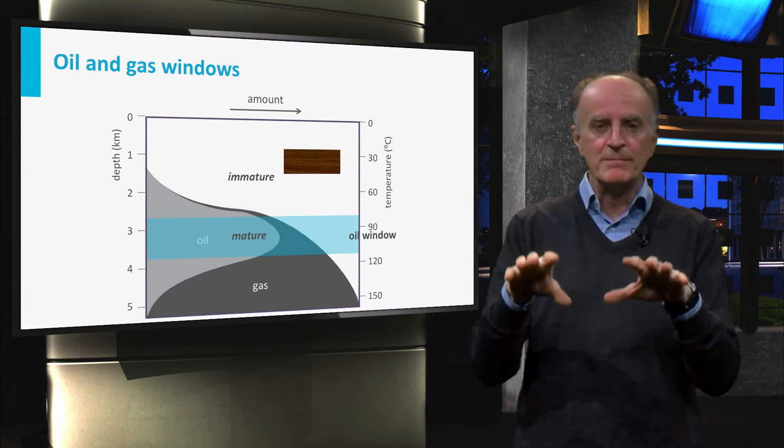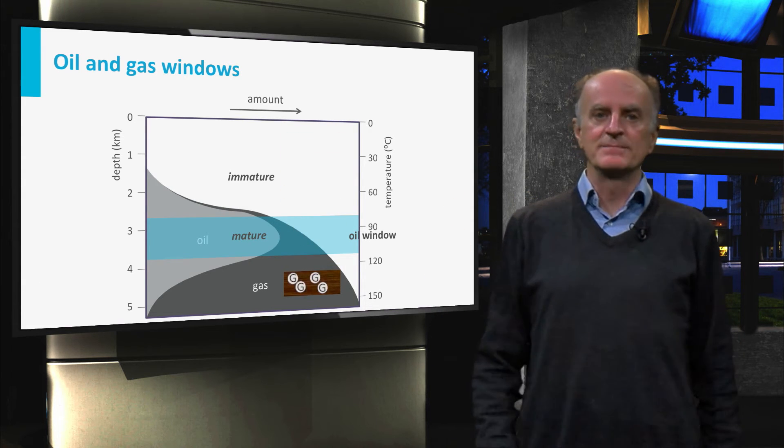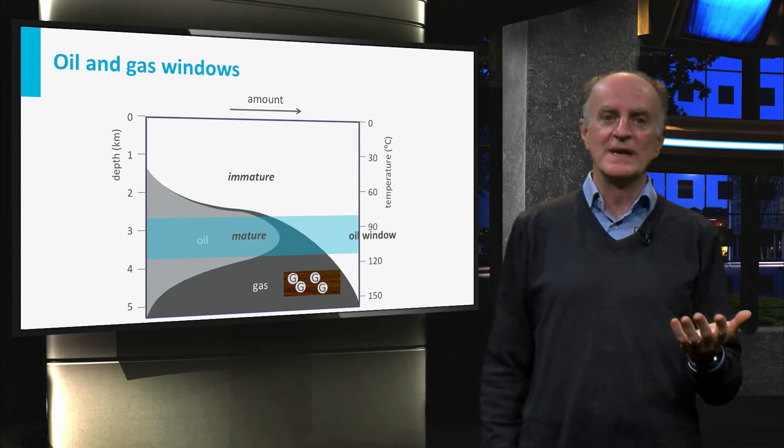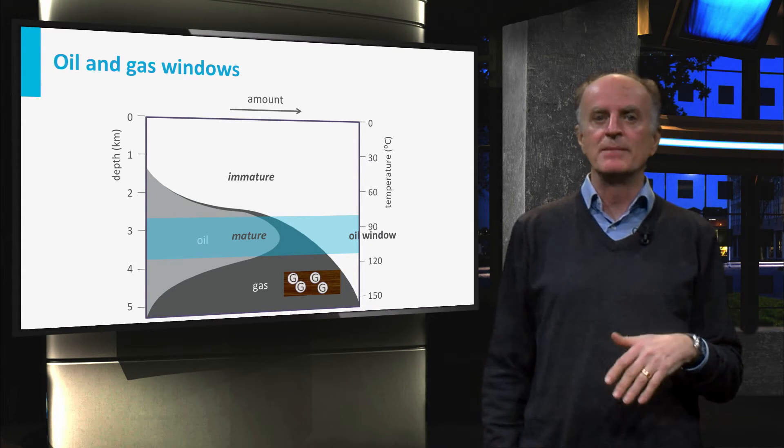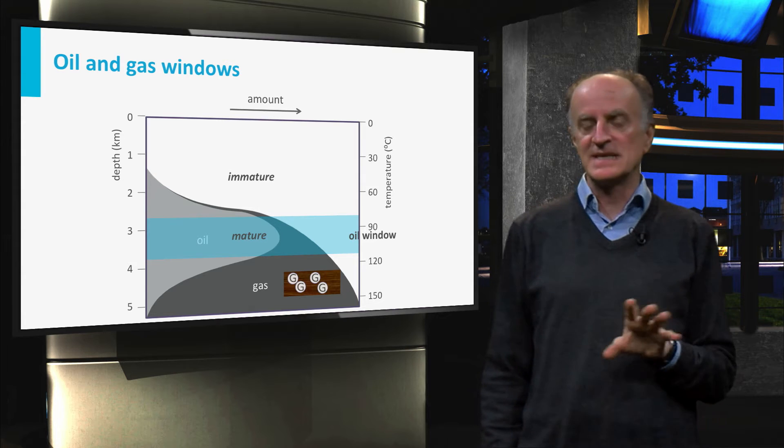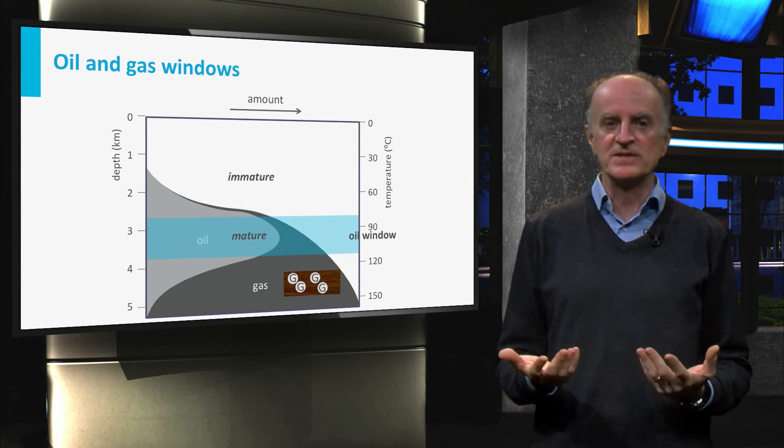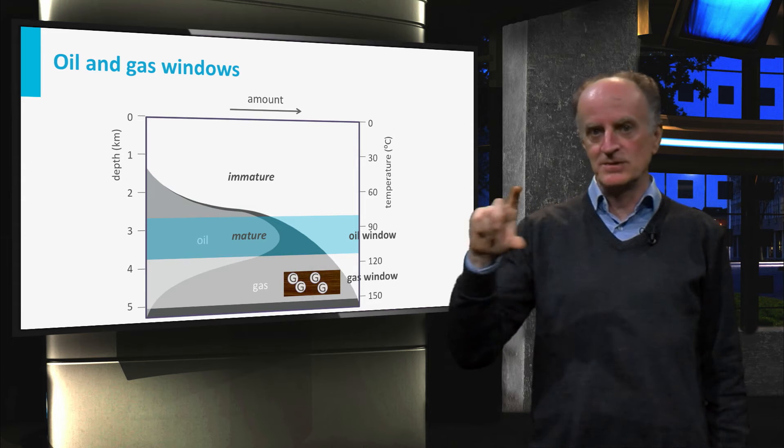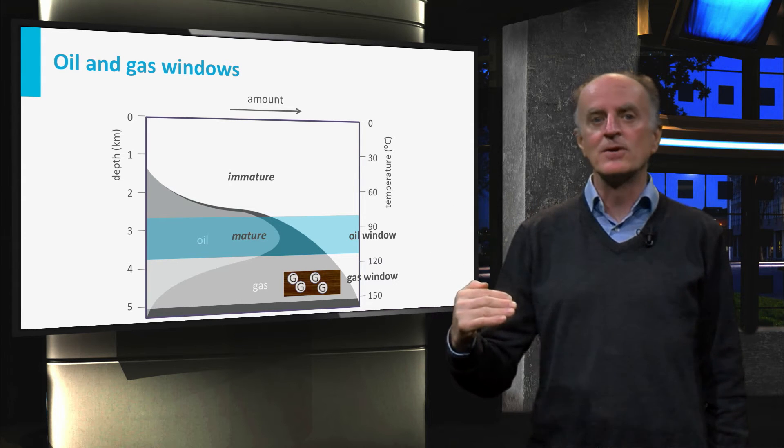When rocks subside even more, they acquire even higher temperatures and production of oil will end. Rocks have become over-mature. At the same time, generation of gas is still very efficient. The gas window is indeed deeper than the oil window.